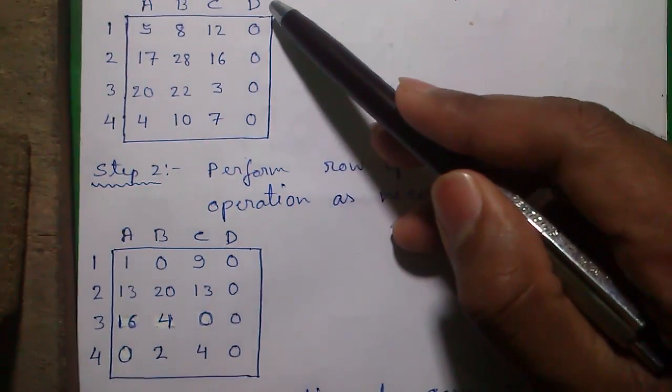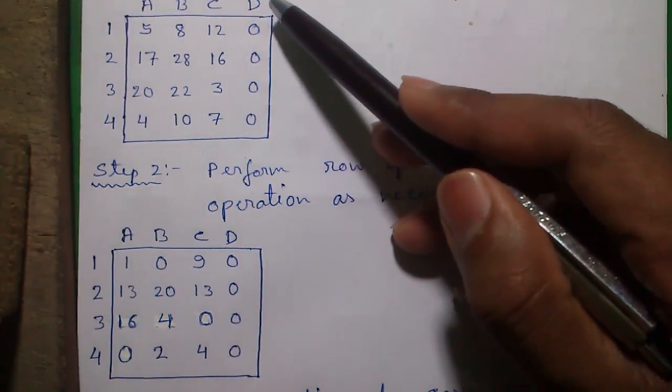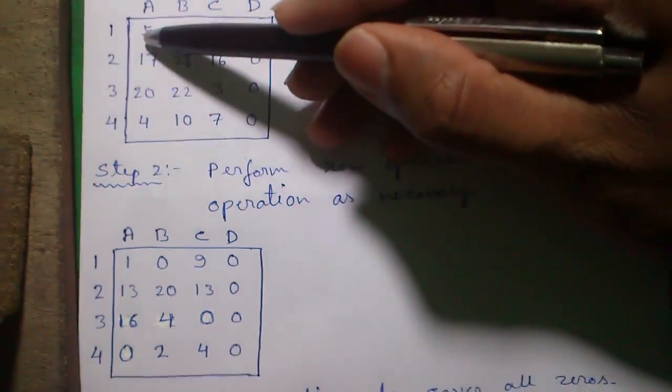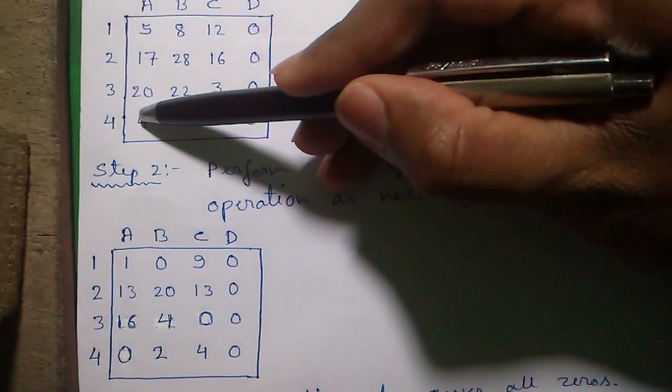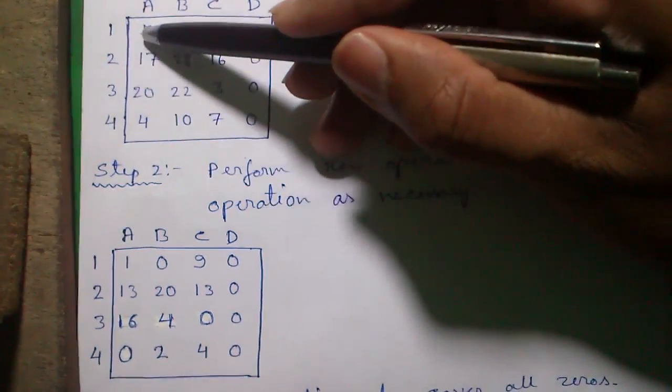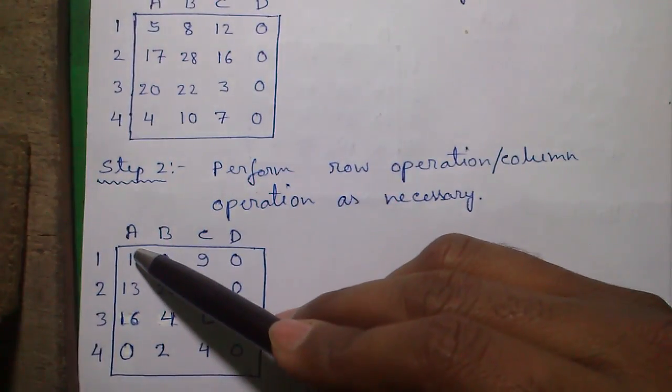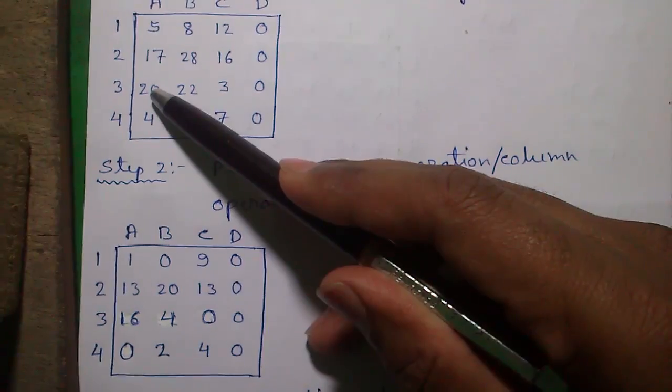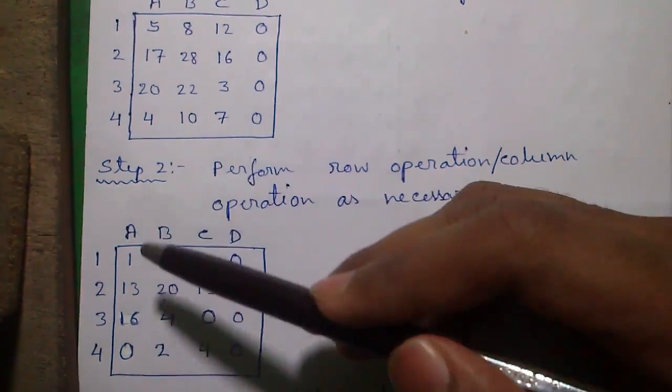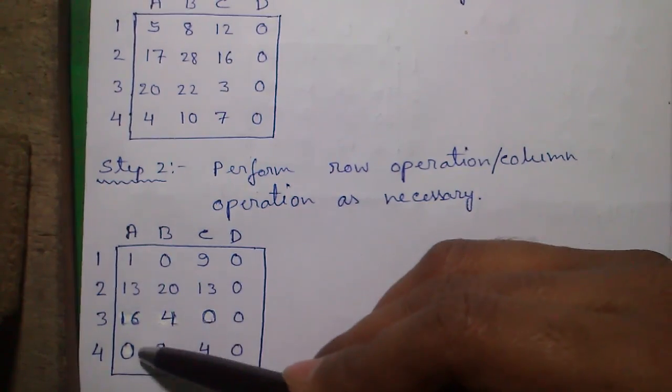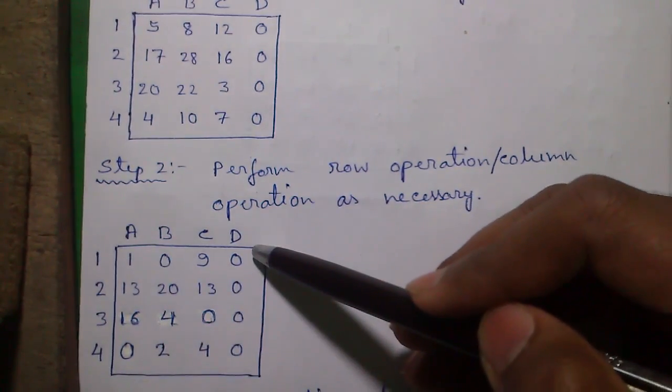So here we will perform column operation. For that, find out the smallest number in each column. In column 1 the smallest number is 4. Subtract 4 from each of the elements in column 1. So we will get 5-4=1, 17-4=13, 20-4=16, and 4-4=0. Our objective is to get at least one 0 in each row and each column.